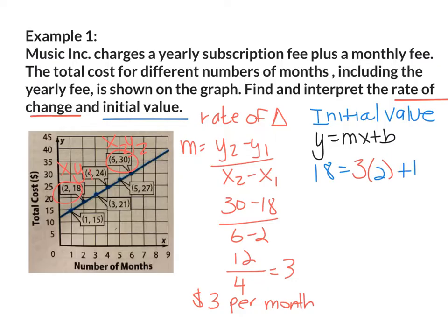I'm going to multiply by my x value which is 2. And then I'm going to add b. So I'm going to bring everything down. 18 equals 3 times 2 is 6 plus b. I'm going to subtract 6 from both sides. 18 minus 6 is 12. And that equals b.